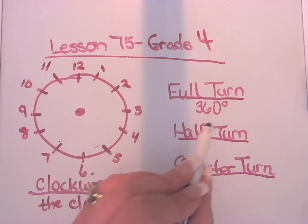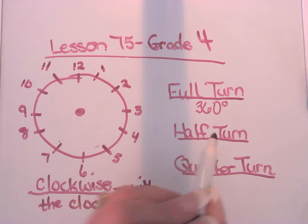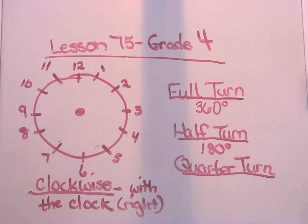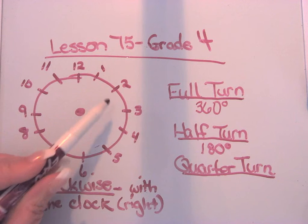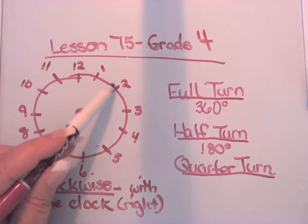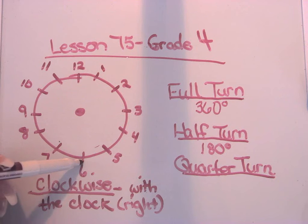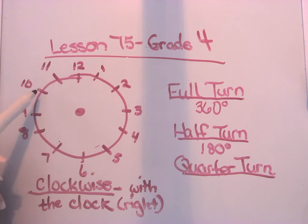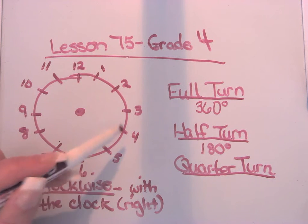A half a turn is half of 360, which would be 180 degrees. So if we start at 12 and we go down to 6, that's 180 degrees. If I go 12 all the way this way to 6, that's clockwise. We went 180 degrees. If I went from 12 going past 11, 10, 9, 8, 7, to 6, then that's counterclockwise. So a half turn counterclockwise or a half turn clockwise.